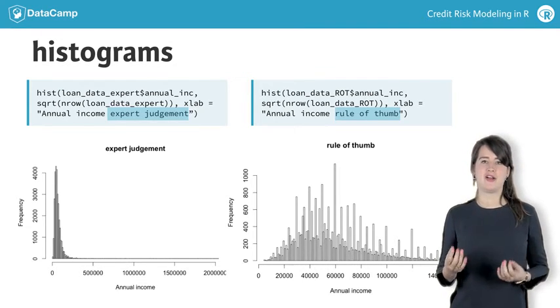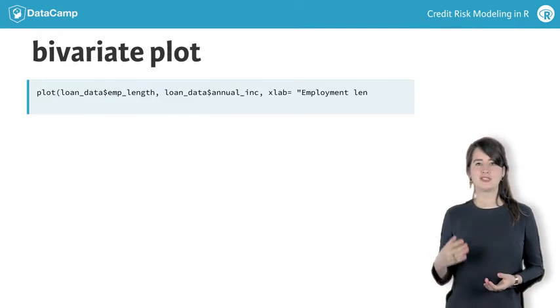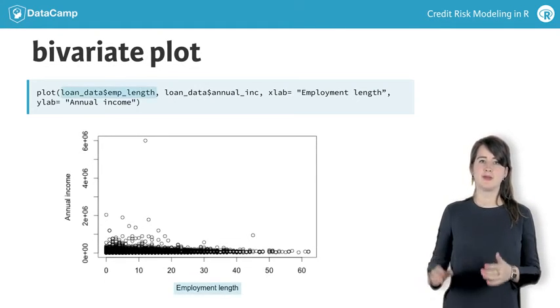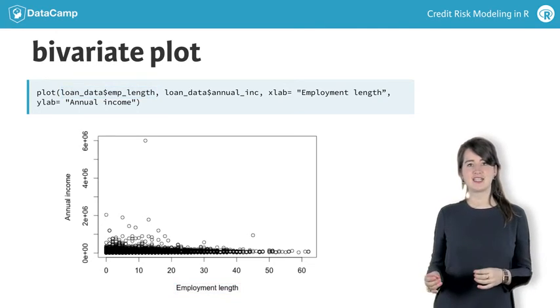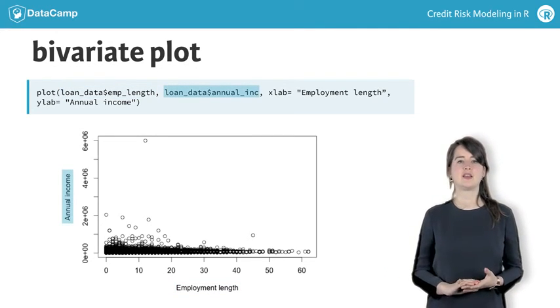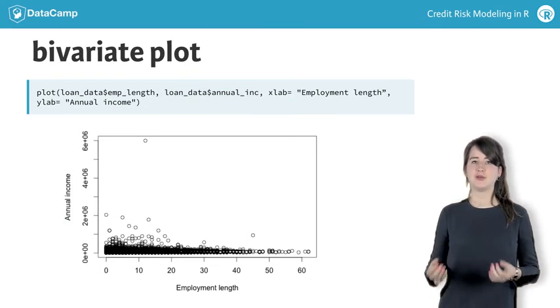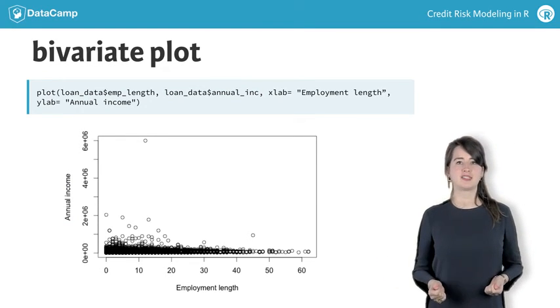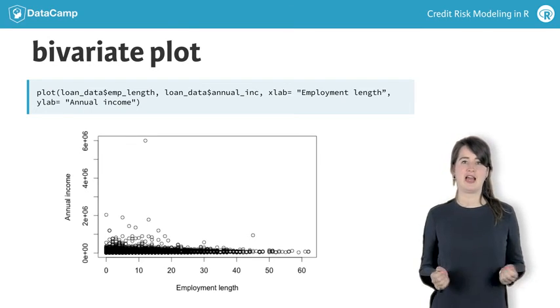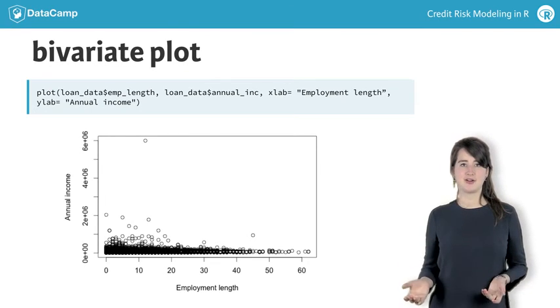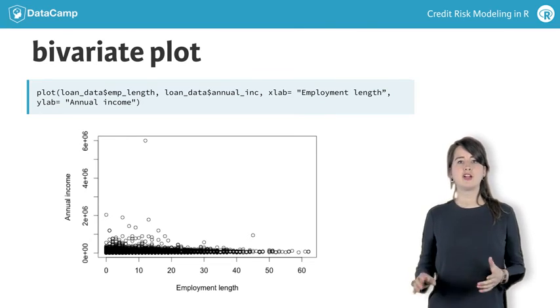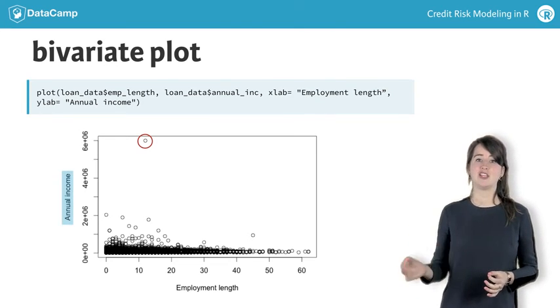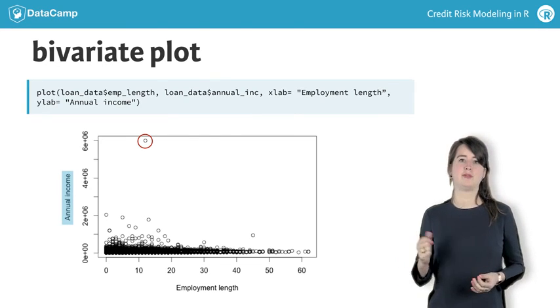Let's conclude by looking at a bivariate plot. When you include a second variable in the plot function, the first argument will be plotted on the x-axis and the second argument on the y-axis. A bivariate plot for employment length and annual income is shown here. Having a look at bivariate plots can be interesting to track bivariate outliers, which are outliers on two dimensions of the data. For the combination plotted here, we only see an outlier on the scale of annual income and not for employment length.